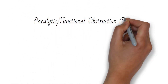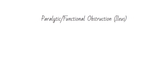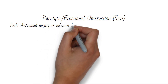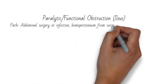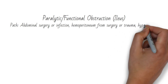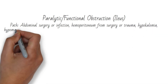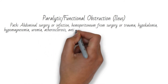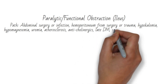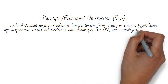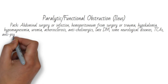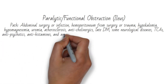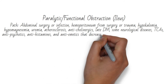Now let's talk about functional small bowel obstruction, or ileus. This is caused by abdominal surgery or infection, hemoperitoneum from surgery or trauma, electrolyte abnormalities like hypokalemia or hypomagnesemia, uremia, atherosclerosis, late diabetes mellitus, neurological diseases such as Parkinson's, and drugs like opiates, anticholinergics, TCAs, antipsychotics, antihistamines, antiemetics that decrease motility, calcium channel blockers, and muscle relaxants.